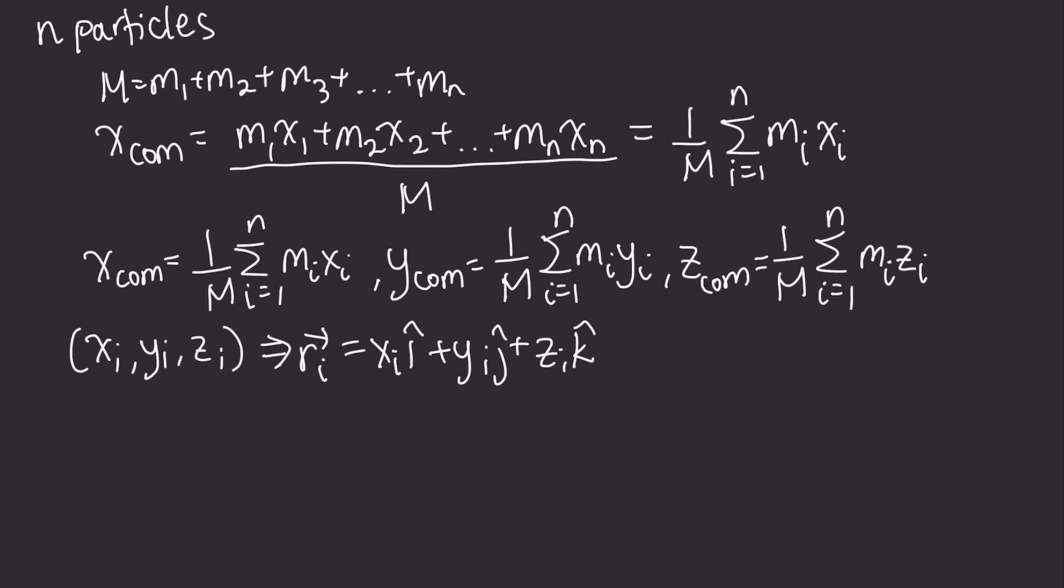So now we can rewrite the center of mass as a vector using the same exact notation that we just did. The center of mass as a vector just becomes the sum of all the center of masses in their respective directions, and we're going to show that direction with the unit vector symbols.